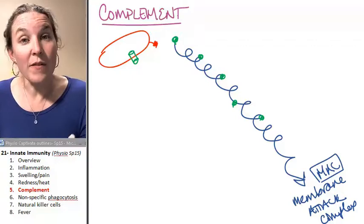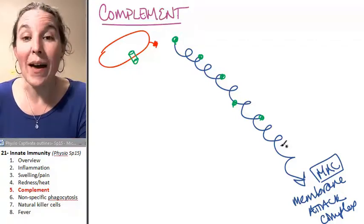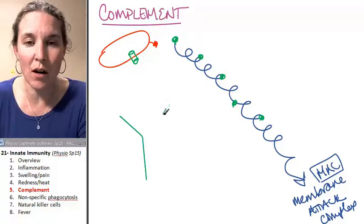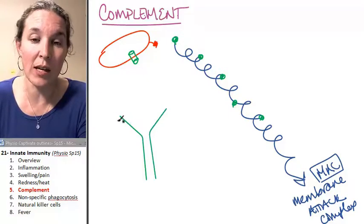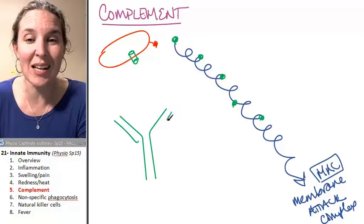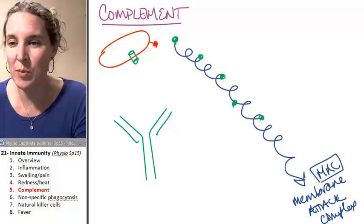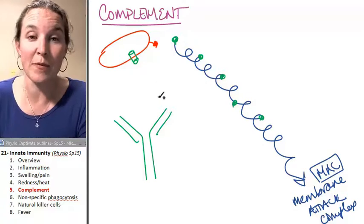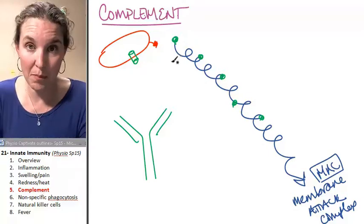Complement is part of the innate immune system. However, antibodies, I've told you the antibodies are part of the acquired immune response and also part of the innate immune response. And this is an example of how antibody function can carry over.